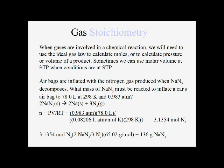Once we have moles of nitrogen gas, we do the stoichiometry of the reaction just as we normally would. We take the stoichiometric ratio from the balanced equation: 2 moles of sodium azide on top over 3 moles of nitrogen gas on bottom. We multiply that through to get moles of sodium azide, then multiply by the molar mass of sodium azide, giving us 136 grams of sodium azide.